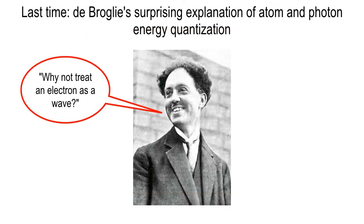Last time we talked about the de Broglie hypothesis — that electrons behave as if they're waves. It was a revolutionary conjecture. Back in the early 1700s there was already a similar debate about light itself: does light behave as a particle, or as a wave? And de Broglie thought the energy levels of the hydrogen atom could be understood if you treat the electron as a wave.